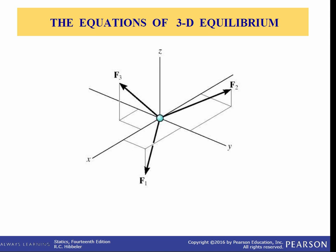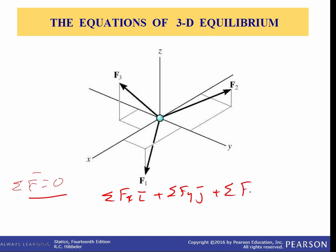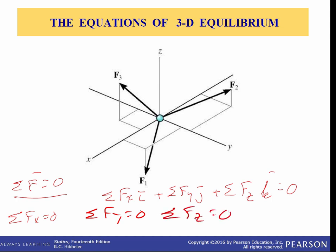In section 3.1 we stated that the necessary and sufficient condition for particle equilibrium is the summation of forces equals zero — as a vector. In the case of three-dimensional force systems, we can resolve the forces into their respective I, J, K components, so we can write the summation of forces in X (I direction), plus Y (J direction), plus Z (K direction) equals zero. The algebraic sum of the components of all the forces acting on the particle along each coordinate axis must be zero.